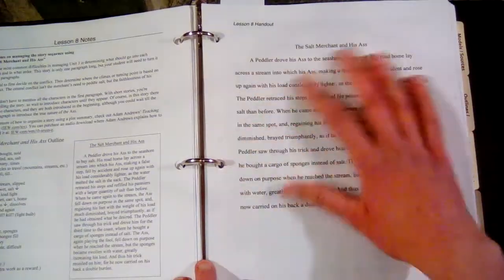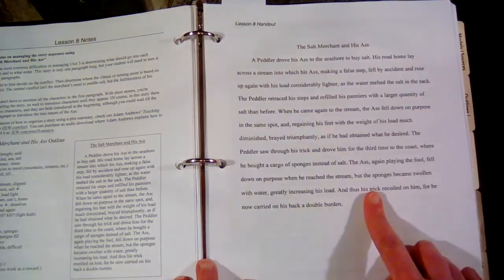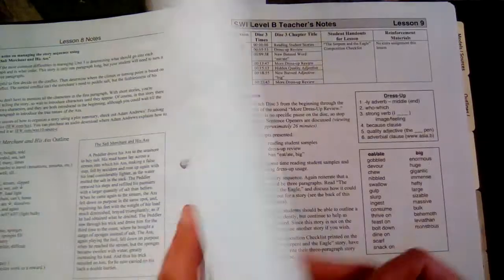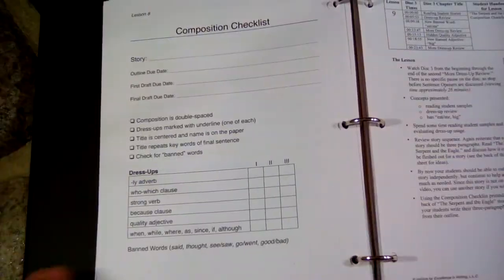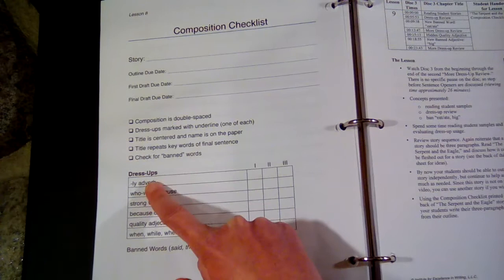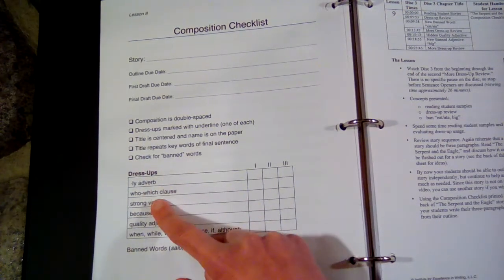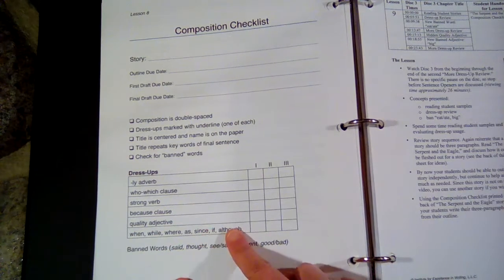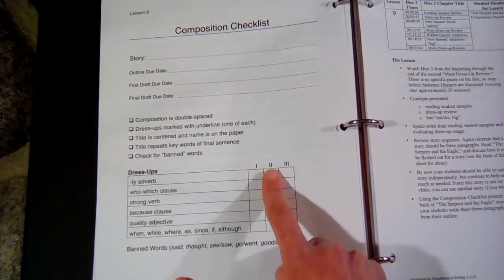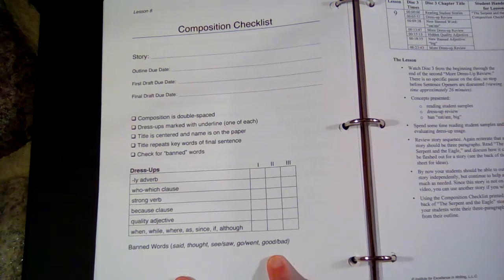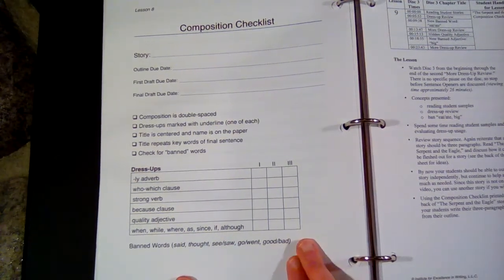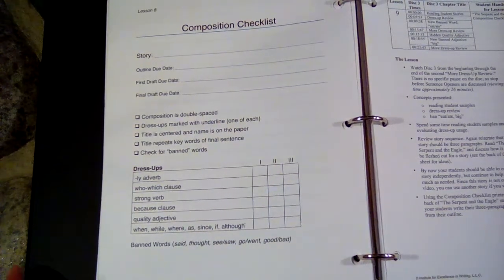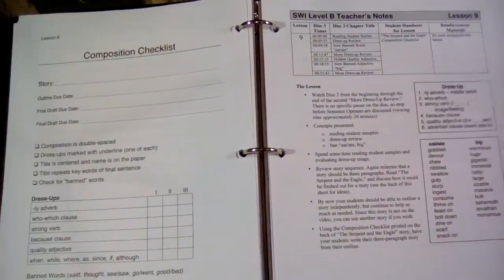The student has to take this information, expand it, make it three paragraphs using the story sequence chart. The student also needs to have all of their dress-ups: their ly adverb, their who which, their strong verb, their because, their quality adjective, and one of these words for every single paragraph—paragraph one, two, and three. Check for the banned words, and if you're using Word like Microsoft Word, you can easily just do a search for these so you can easily see if you've used one of the banned words.